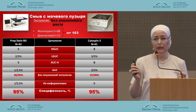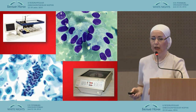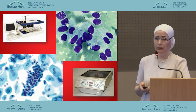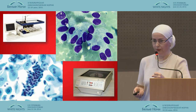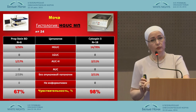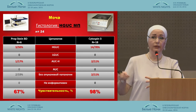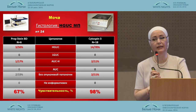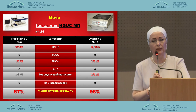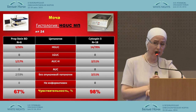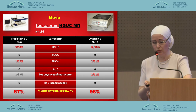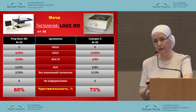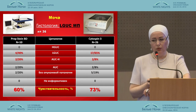Here is a case without tumor growth, and you can see that the figures are quite equal between Prepstain and Cytospin. Here is the urine — the swab material is cell-based. And regarding conventional urine: again, Prepstain gives sensitivity of 67%, and Cytospin is much higher.